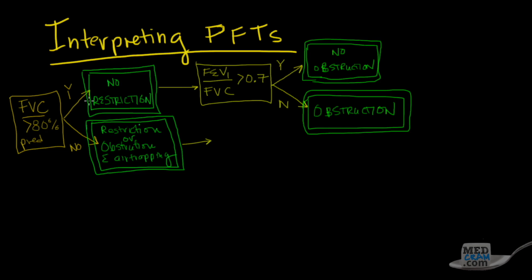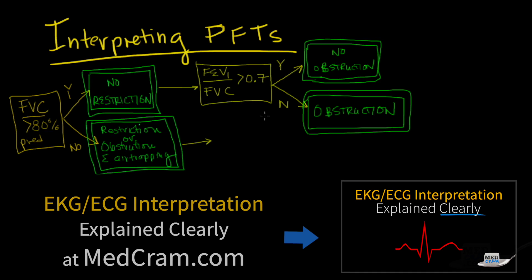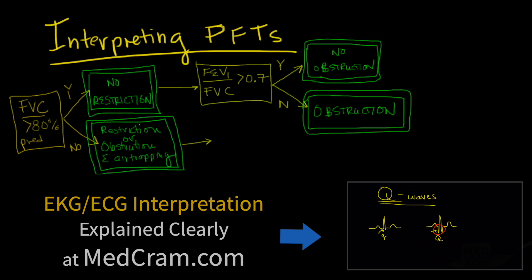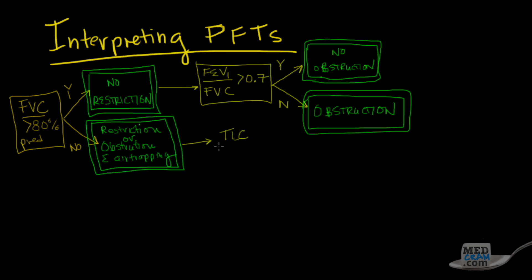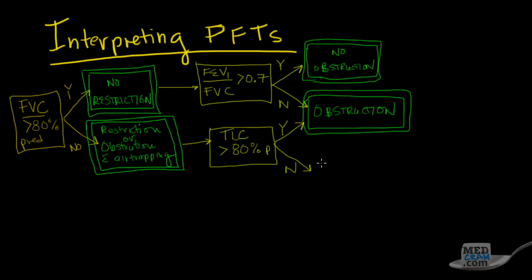Going back — if the FVC is not greater than 80% of predicted, you either have restriction or obstruction with air trapping. The next question to ask is: is the total lung capacity greater than 80% of predicted? If the answer is yes, you have obstruction with air trapping. If the answer is no — less than 80% of predicted — then you have restriction.